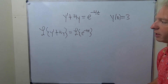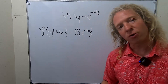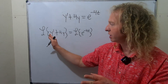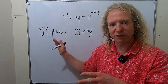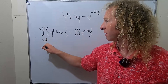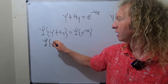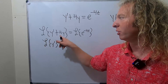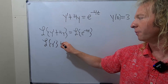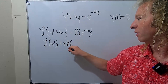The next step is to use the fact that the Laplace transform is actually linear, so you can take the Laplace of each individual piece. You can also pull out constants, so this becomes the Laplace of y prime, plus 4 times the Laplace of y.